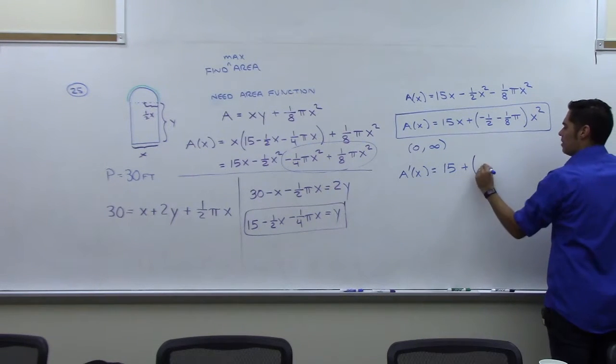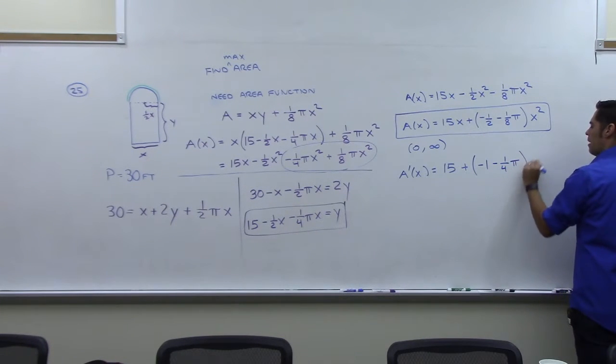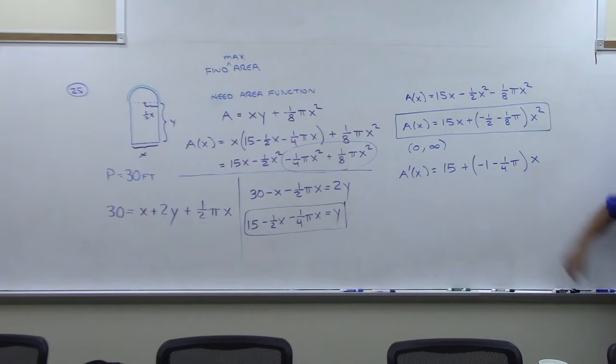So negative 1 half times 2, that's negative 1. And then when I multiply that by 2, I get negative 1 fourth pi, and now this is x. So that 2 just popped out. And now I need to set that equal to zero.